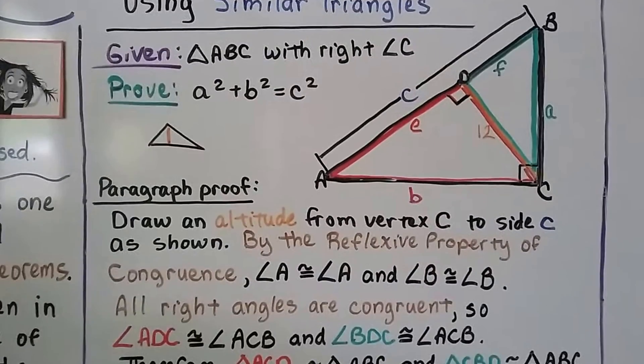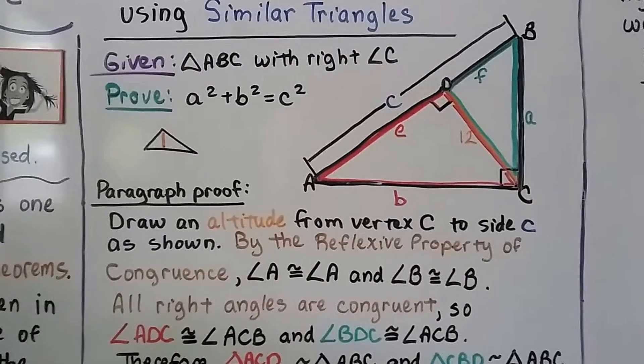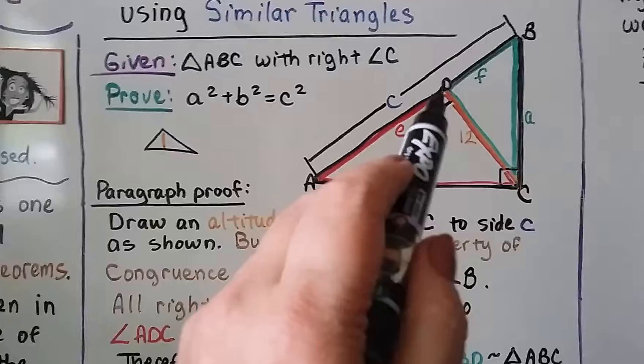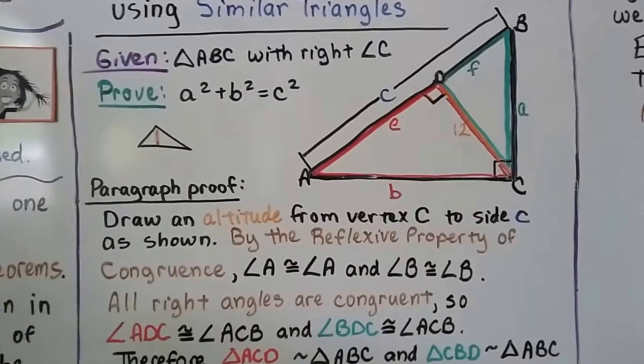So we have a paragraph proof. For the big black triangle, we draw an altitude. It's going to go from C to D here, alright? And if you're confused about that being an altitude...